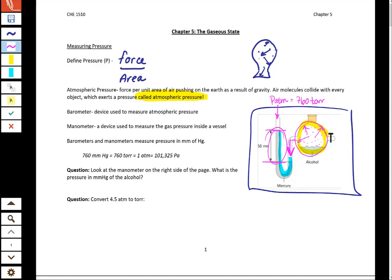We have to take the pressure of the atmosphere and add the 50 millimeters of mercury to get the pressure inside the vessel. That's the pressure of the alcohol.